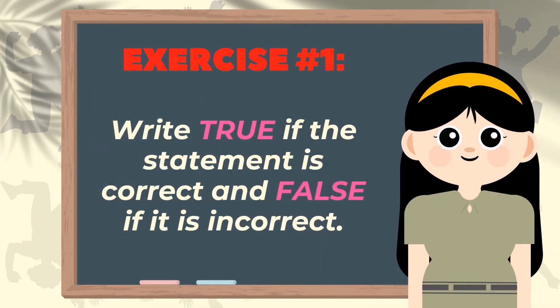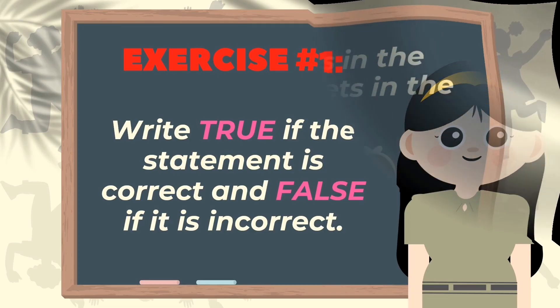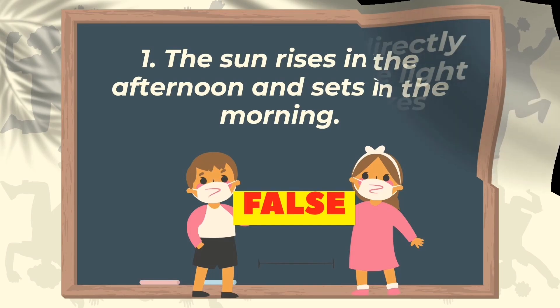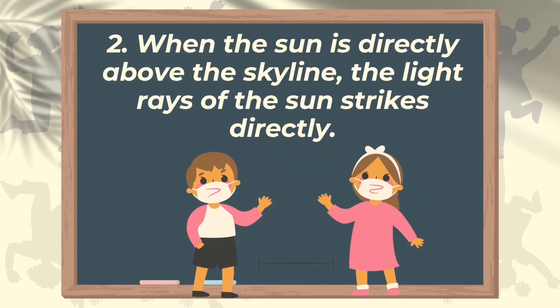Now let's answer Exercise 1. Write true if the statement is correct and false if it is incorrect. Number 1: The sun rises in the afternoon and sets in the morning. The correct answer is false — the sun rises in the morning and sets in the afternoon. Number 2: When the sun is directly above the skyline, the light rays of the sun strike directly. The correct answer is true.